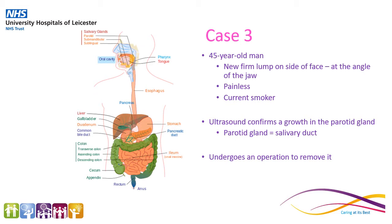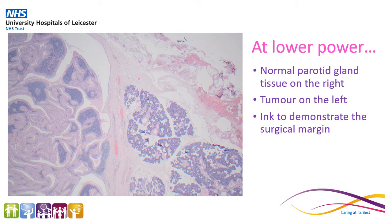Case three is that of a 45-year-old man who develops a new firm lump on the side of his face, roughly at the level of the angle of the jaw. The lump is painless, and of note is that he is a current smoker. He has an ultrasound scan which confirms the growth, and it's situated within the parotid gland. The parotid gland is one of the salivary glands situated around the mouth. He undergoes an operation to remove this. Here we have a section of the parotid gland and the tumour at lower power, with normal parotid tissue on the right-hand side and the tumour on the left. This picture also demonstrates that we ink the surface of surgical specimens in order to demonstrate where the margin is.